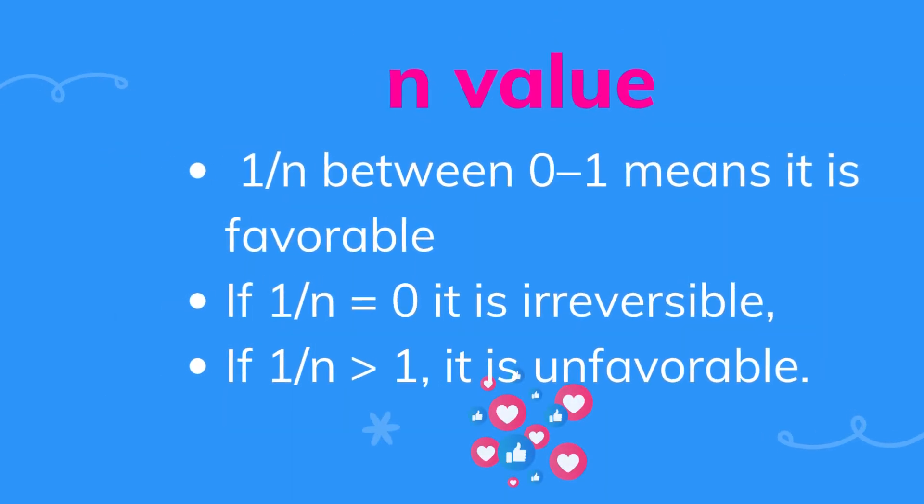Let us consider the n values, which are another important parameter for the Freundlich equation. If 1/n is between 0 and 1, it means adsorption takes place spontaneously. However, if 1/n equals 0, it means it is reversible — adsorption and desorption can take place simultaneously. On the other hand, if 1/n is greater than 1, it is unfavorable, meaning adsorption does not take place onto a particular surface spontaneously.